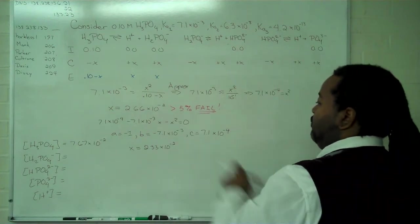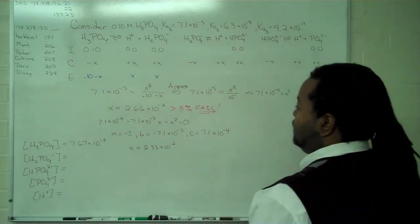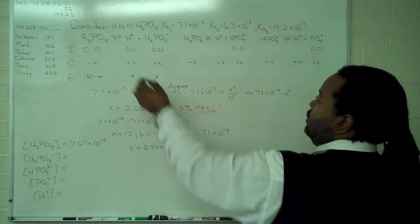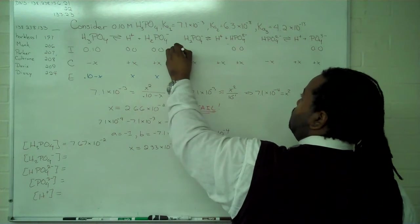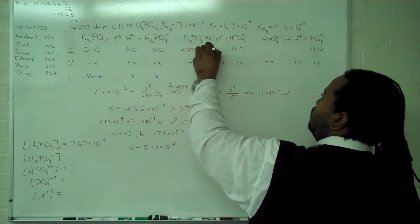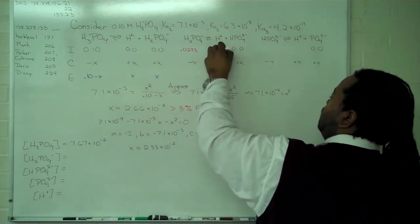So we have the concentration of undissociated acid. And now we have a value for x. So we're going to take that and substitute in here. So this is 0.0233, 0.0233.